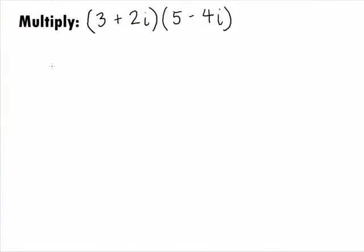In this example, we want to multiply the two complex numbers, 3 plus 2i, times 5 minus 4i.